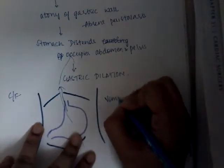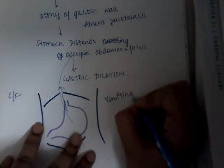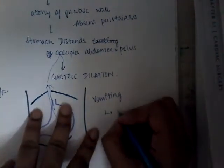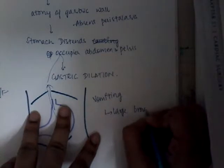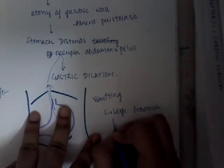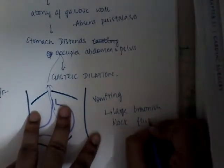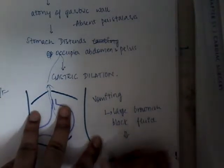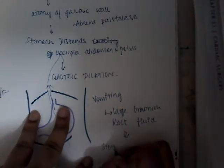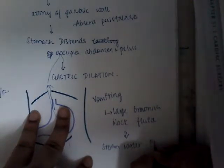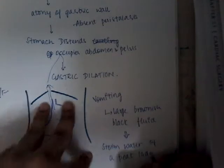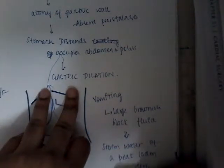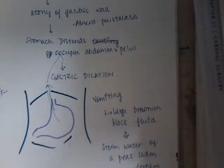Because of absent peristalsis, there is no flow of fluid from the stomach into the intestines. All the food remains in the stomach, which provokes vomiting. The vomit contains large brownish-black fluid. If you collect the vomit and place it in a test tube and hold it to strong sunlight, you can see myriads of small particles suspended in the fluid.